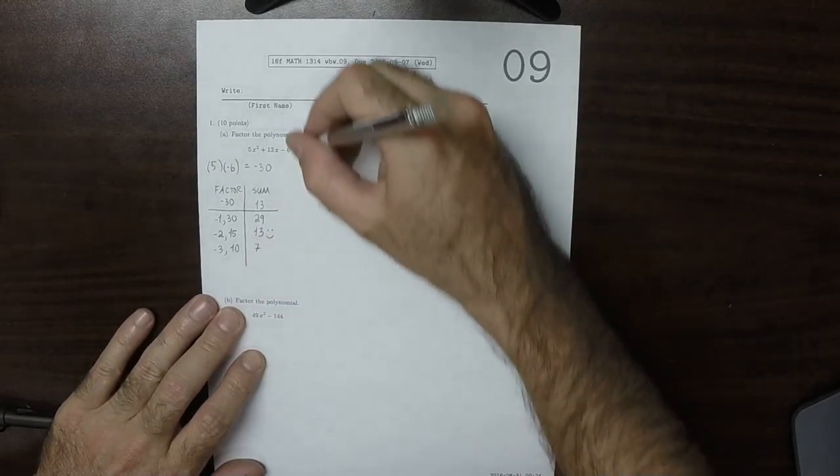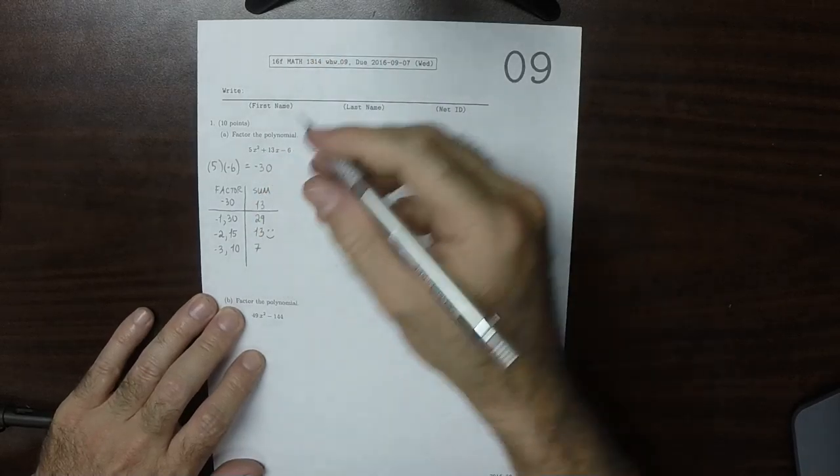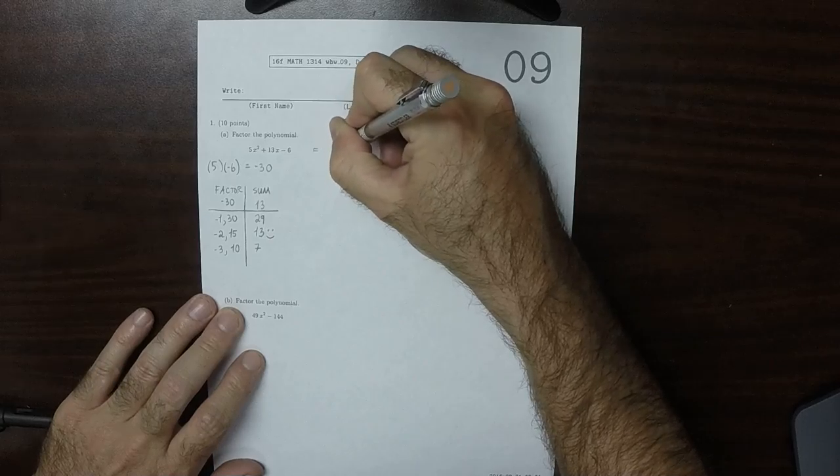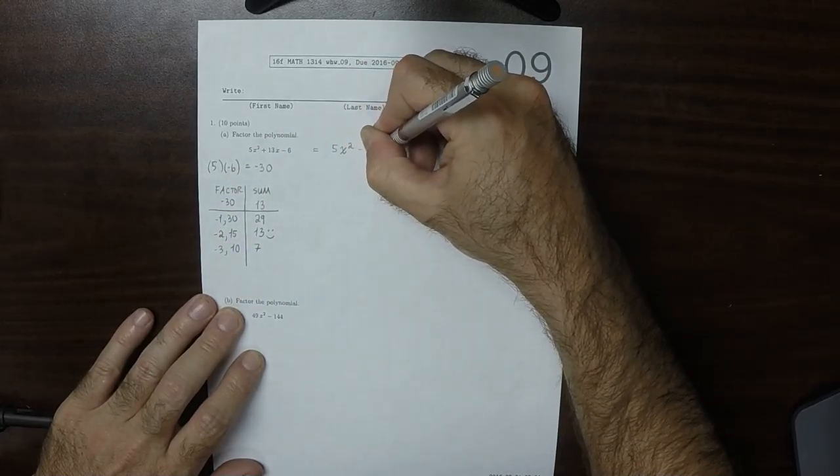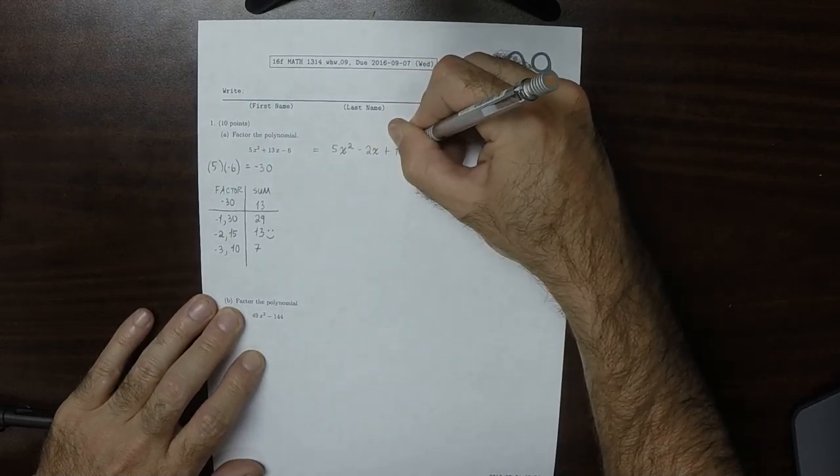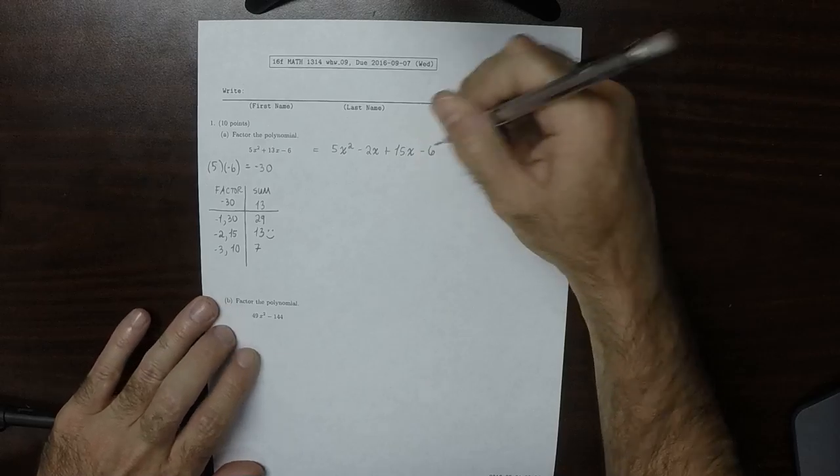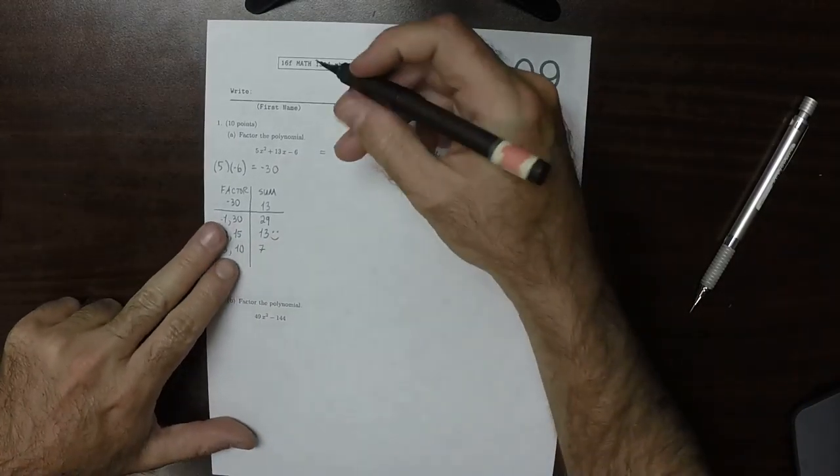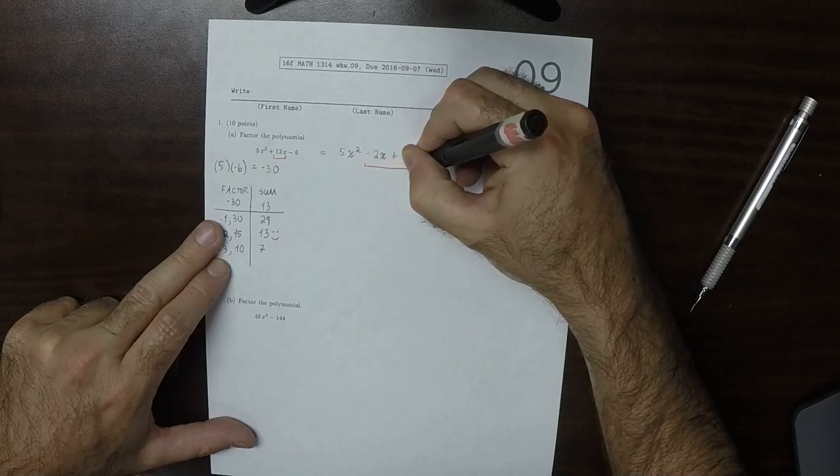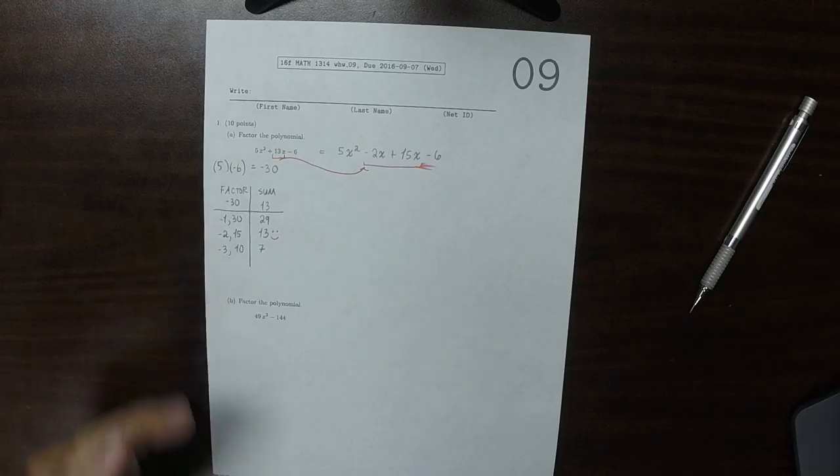So what we'll do is we'll take this, using that information now, we'll take this polynomial and write 5x squared and then minus 2x and then plus 15x and then minus 6. So the purpose of this consideration was to take this 13 and split it like this. Split it in that way.